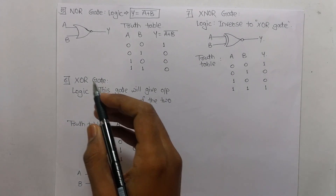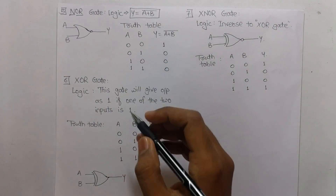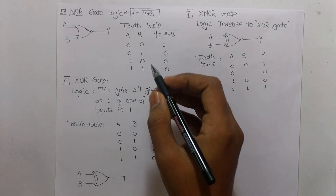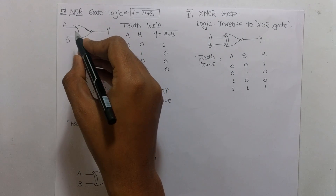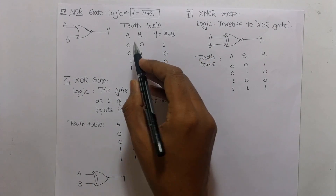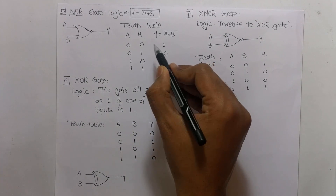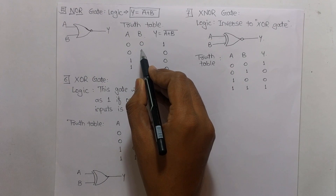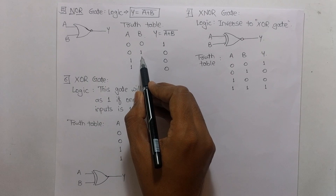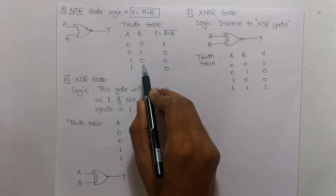The next gate is the NOR gate, which is a combination of NOT and OR gate. The logic is Y equals the inverse of A plus B. The symbol is like OR gate but with a bubble. In the truth table: 0+0=0 but inverse is 1; 0+1=1 but inverse is 0; 1+0=1 but inverse is 0.